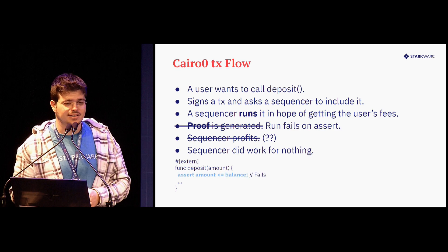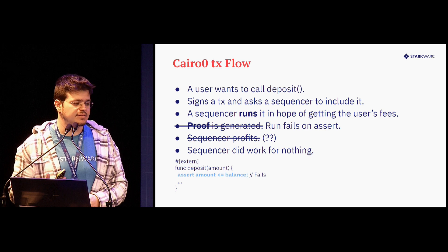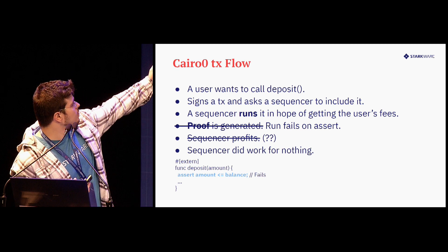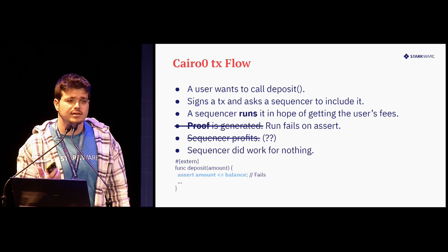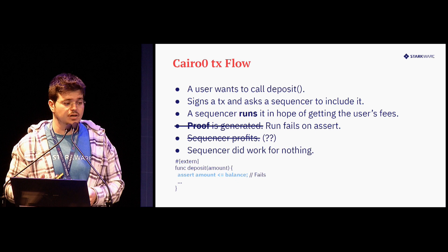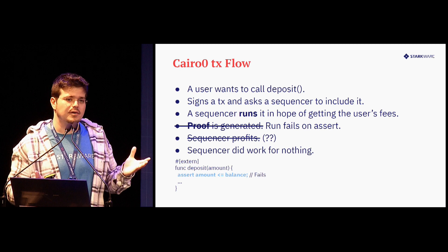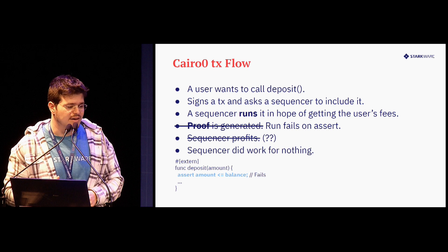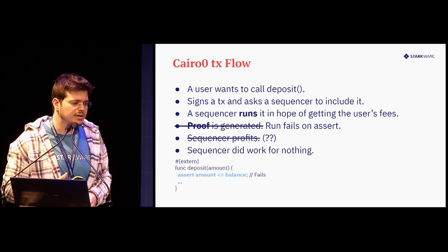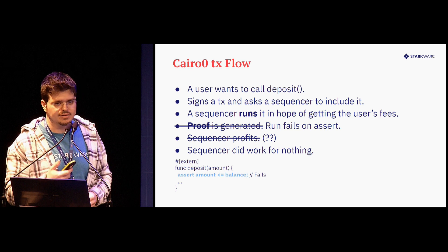But there is also a not very happy flow. The user tries to deposit more money than the balance they have. When the sequencer tries to run it, the assert fails because they didn't have enough money. So the run fails and the transaction is not included in the block. The sequencer can't get their money because in Cairo you can't prove invalid things — which is good.